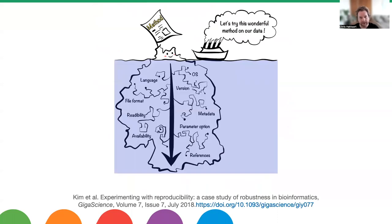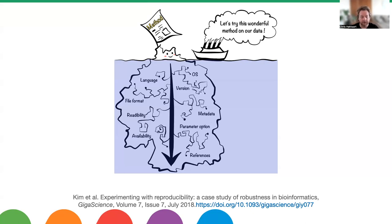When you read a paper or try to replicate someone else's results, quite often the described methods don't have all the information you need. This is represented by an iceberg — there's a lot of hidden information that hasn't been described properly, such as the language used, OS, version, metadata, file formats, software availability, parameter options, and references. Even if you have the software version, there's a lot more required to actually reproduce a pipeline across different sites, environments, and research groups.